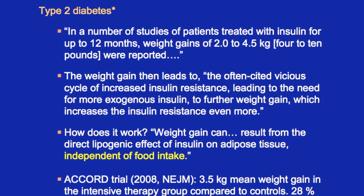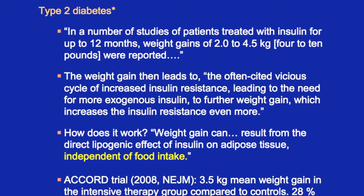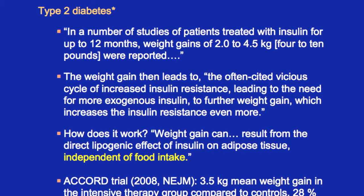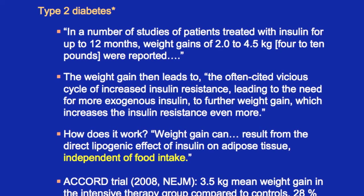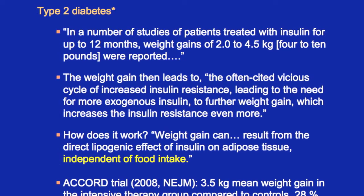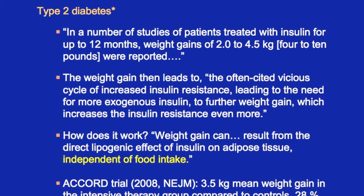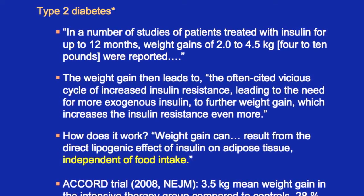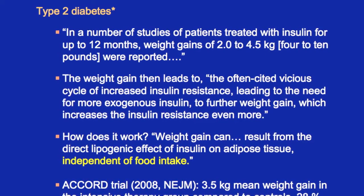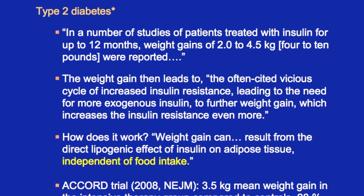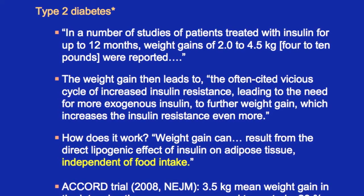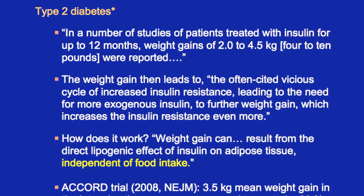Type 2 diabetics given insulin therapy get fatter. This is a problem in clinical treatment of diabetes because you don't want diabetics to get fatter given their high risk of heart disease. The ACCORD trial in 2008 — a classic trial of intensive insulin therapy to keep blood sugar down — showed a 7-pound mean weight gain in the intensive therapy group compared to controls, and nearly a third of the intensive therapy group gained more than 20 pounds.